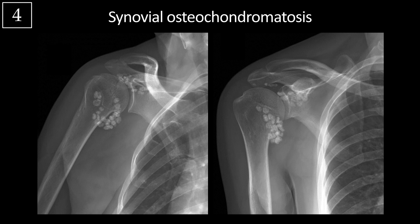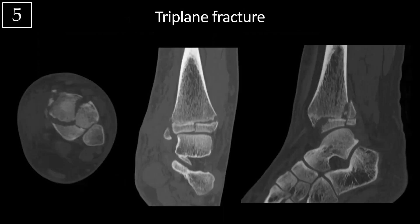Synovial osteochondromatosis is most common in the knee but can also occur in the shoulder — a monoarticular disorder with multiple small ossific or cartilaginous loose bodies that may also cause pressure erosion, limited range of motion, pain, and swelling. Finally, the triplane fracture specifically occurs in adolescents as the growth plate fuses medially but leaves the lateral aspect open. It's considered a Salter-Harris IV-type fracture involving a vertical epiphyseal, horizontal growth plate, and oblique metaphyseal component.